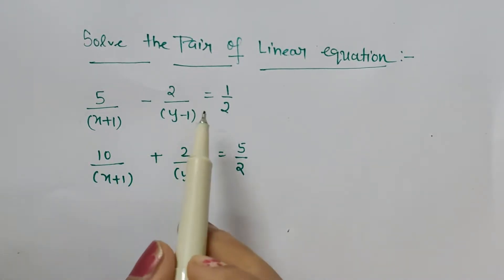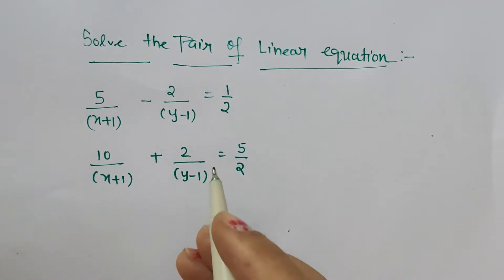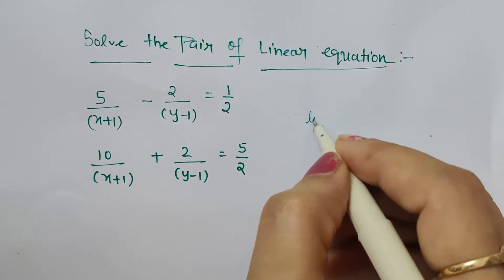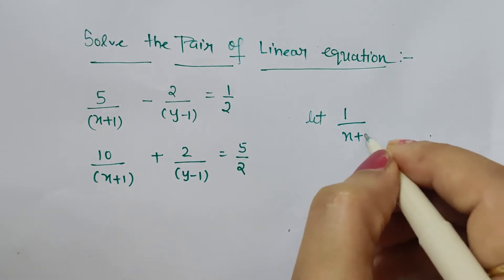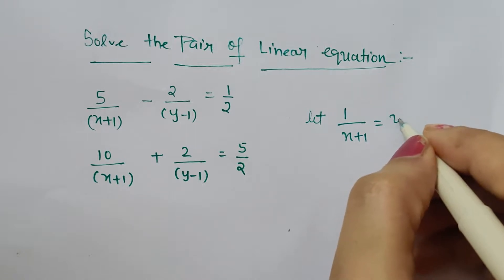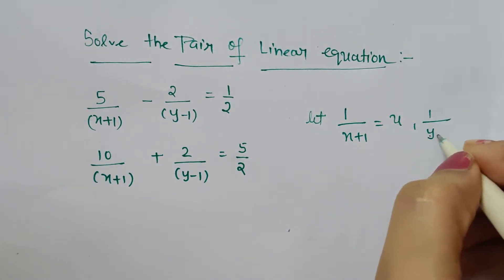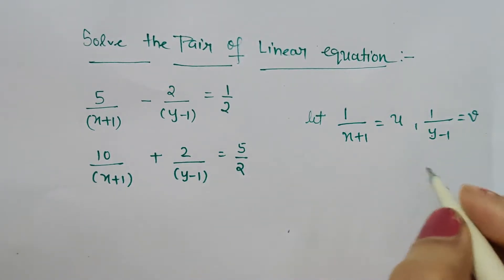We have 1/(x+1) and 1/(y-1). So what we will do is assume: let 1/(x+1) be u and 1/(y-1) be v. This we have assumed.